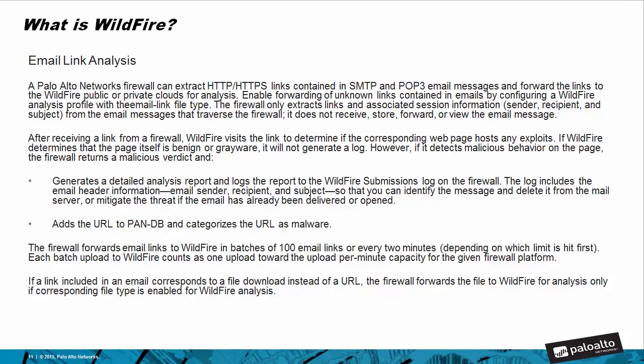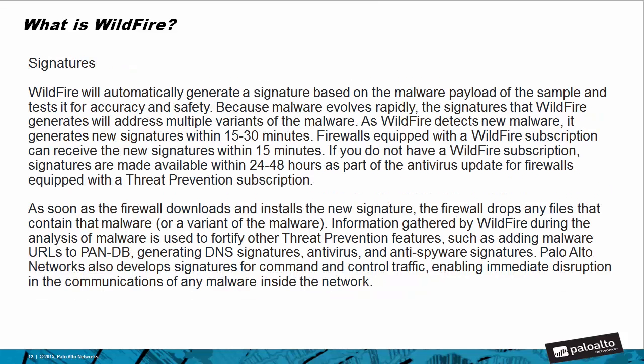Now on to signatures. WildFire can automatically generate a signature based on the malware payload of the sample and test it for accuracy and safety. Because malware evolves rapidly, the signatures that WildFire generates will address multiple variants of the malware. As WildFire detects new malware, it generates new signatures within 15 to 30 minutes. Firewalls equipped with a WildFire subscription can receive new signatures within 15 minutes. If you do not have a WildFire subscription, signatures will be made available within 24 to 48 hours as part of the antivirus update for firewalls equipped with a threat prevention subscription. As soon as the firewall downloads and installs a new signature, the firewall drops any files that contain that malware or a variant of the malware.